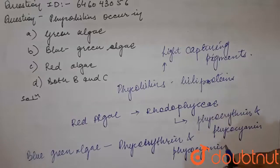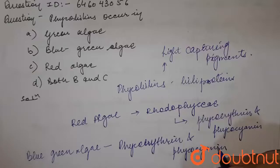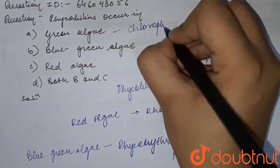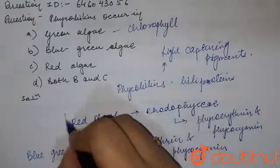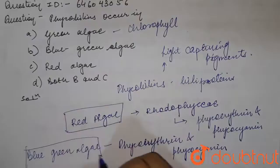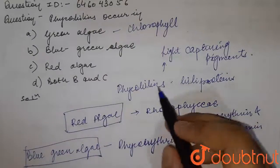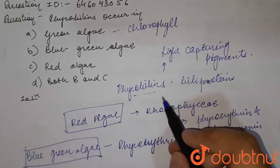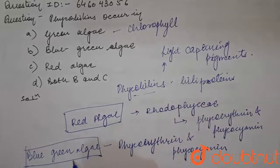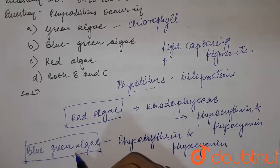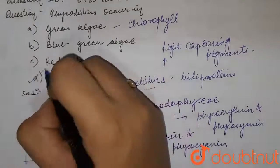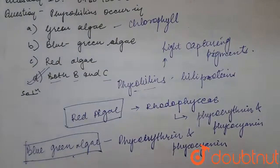If we talk about green algae, these have mostly the chlorophyll pigments. So you can see that in the red algae and the blue-green algae you can find the phycobalins. These phycobalins are present in the red algae and blue-green algae both of them, so our answer to the question would be option D: both B and C. The answer is option D, thank you.